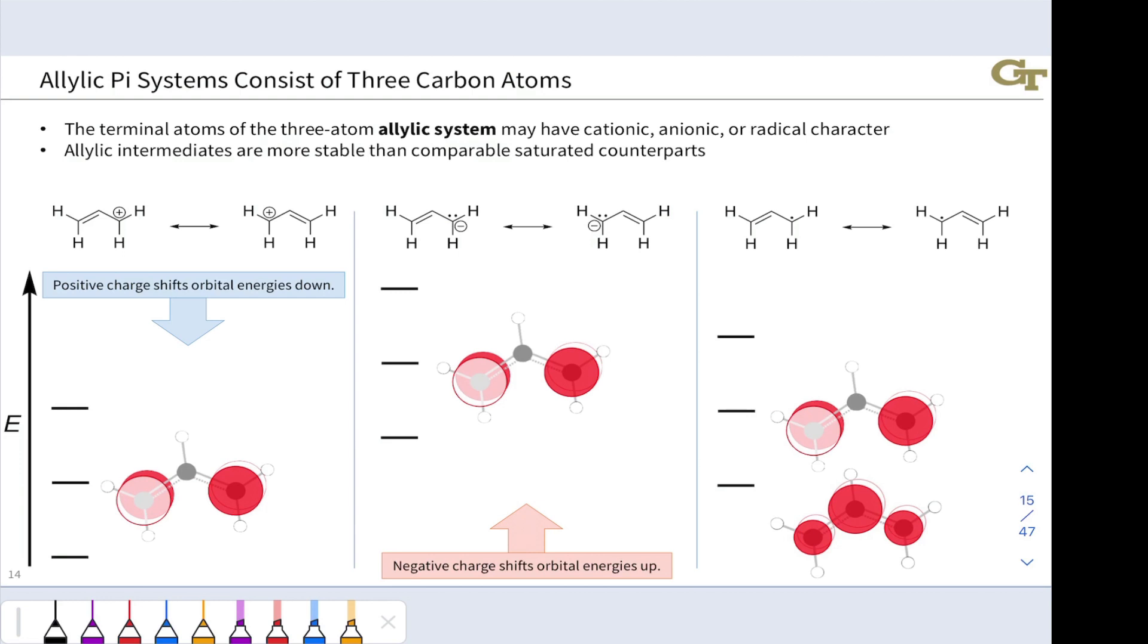More broadly on the slide, we're looking at the pi molecular orbitals of the allyl system. Because there are three atoms in the conjugated system, there are three pi molecular orbitals, although for a given type of intermediate, only one of the three is really important. For example, in the allyl cation, because its positive charge pulls those orbital energies down, the most important orbital in this molecule is the LUMO, this orbital right here, the lowest unoccupied molecular orbital.